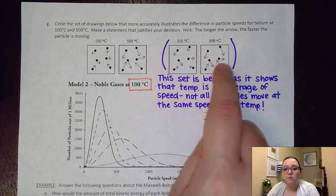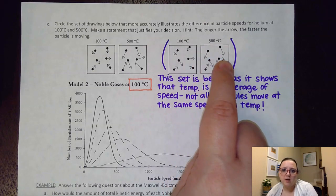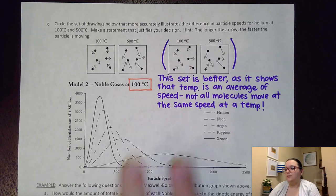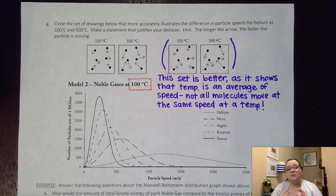So some of these are going slower, some of them are going faster, and that average is giving us a temperature of 100 degrees Celsius. Same goes for this one. Overall I have longer arrows even though I still have some short ones and some long ones. And so again that average would be higher for that higher temperature. So the second set is again better because it shows a range of speeds at a particular temperature.